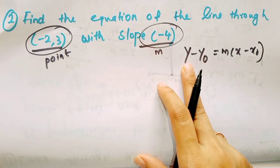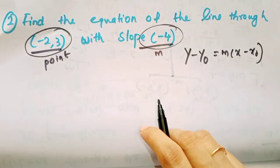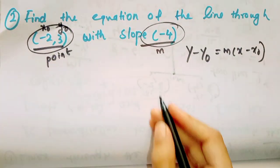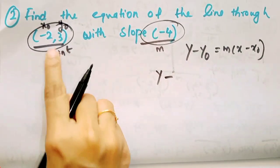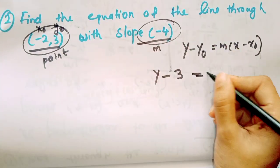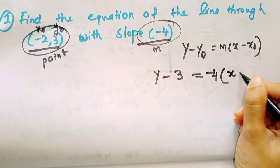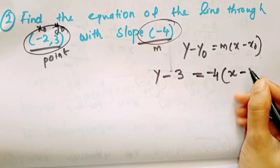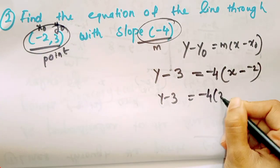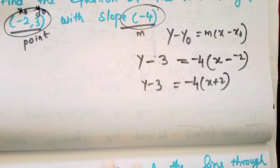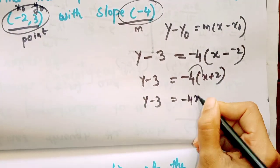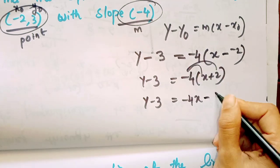The equation is y minus y0 equals m into x minus x0. Now applying the point and slope: y minus 3 equals minus 4 into x minus x0. Here x0 equals minus 2, so y minus 3 equals minus 4 into x plus 2. Expanding: y minus 3 equals minus 4x minus 8.